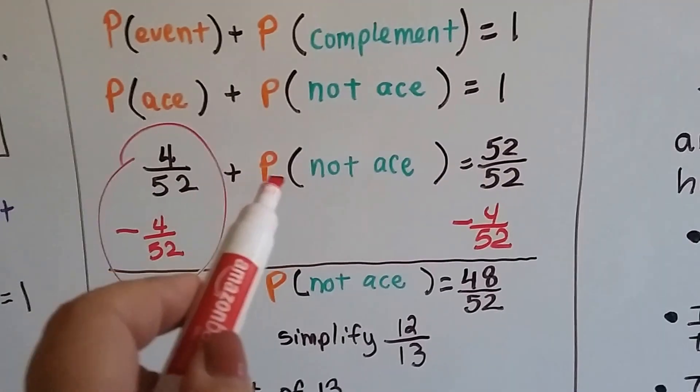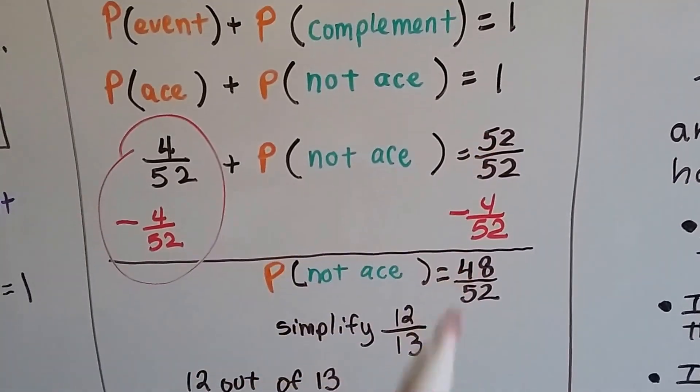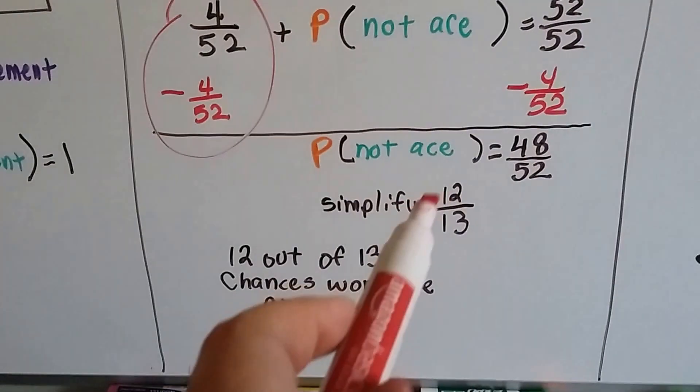Now the probability of not getting an ace is 48 over 52, because 52 minus 4 is 48.